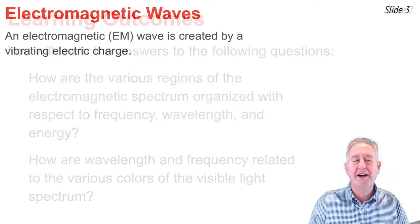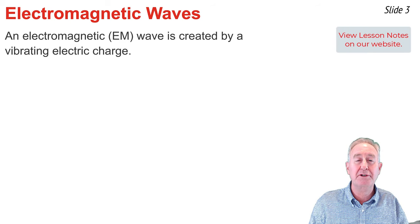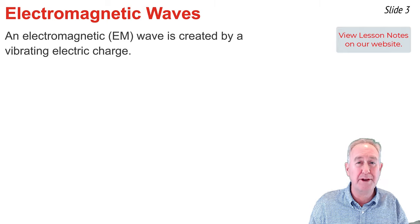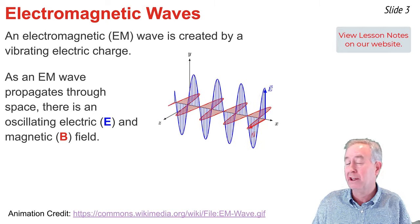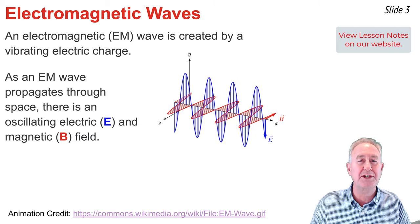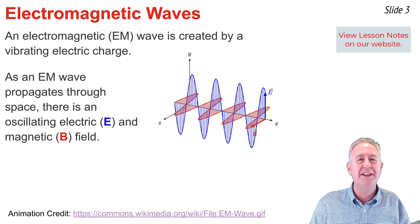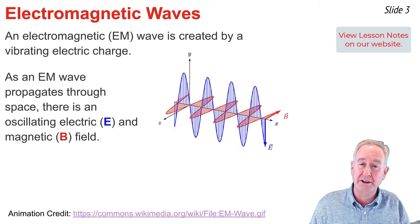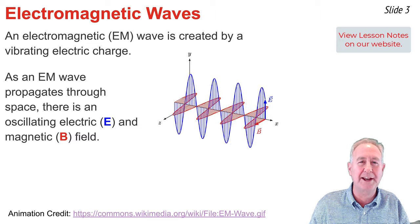A vibrating charge creates an electric and magnetic field that travel outwards from the source of vibration. The intensity of the electric and magnetic field vary over time and space in a sinusoidal manner as shown in this animation. These fluctuations in electric and magnetic field are what we refer to as an electromagnetic wave.